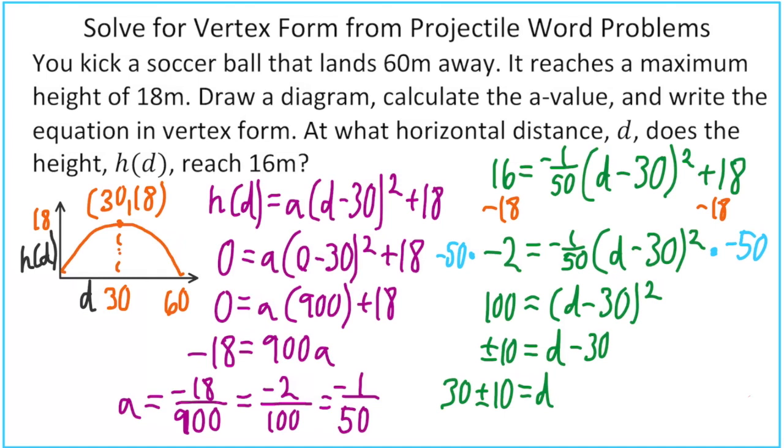There's actually two answers, which kind of makes sense. If you look at the parabola, there's actually two places where it will reach a height of 16 meters. So one of our answers would be 30 plus 10. That would give us 40 meters. And if we go 30 minus 10, we get 20 meters.